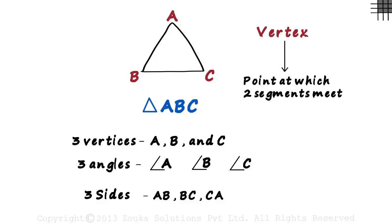In this triangle ABC, we also say that BC is the side opposite vertex A. And similarly AC is the side opposite to vertex B, and AB is the side opposite to vertex C.